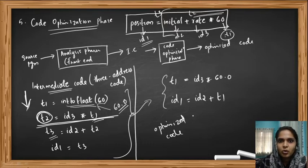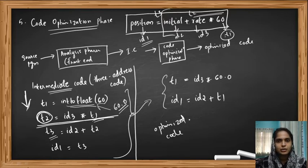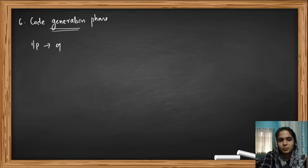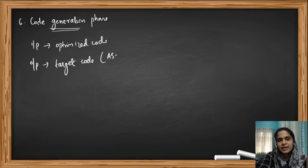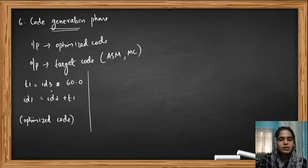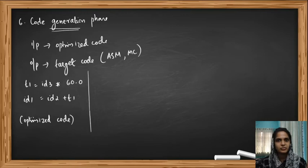Now we feed this optimized code to the last phase — the code generation phase — which produces the final target code. The input to the code generation phase is our optimized code and the output is the final target code, which can be either assembly code or machine code. Our optimized code is: T1 = ID3 * 60.0 and ID1 = ID2 + T1. Now we convert this optimized code into the target code — here, assembly code.